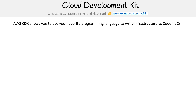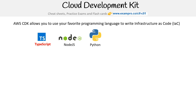Let's take a look here at CDK. CDK allows you to use your favorite programming language to write infrastructure as code. Technically, that's not true because they don't have Ruby, and that's my favorite. Some of the languages include Node.js, TypeScript, Python, and Java.net.